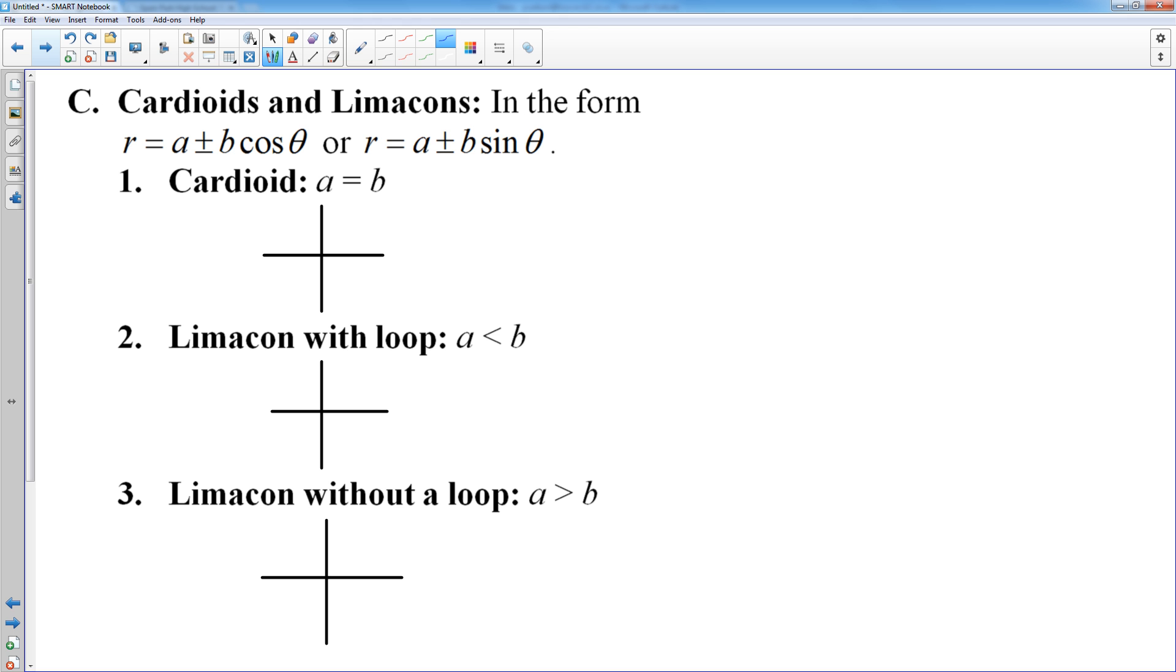The last ones, cardioids and limaçons. They're in the form A plus or minus B cosine theta or sine theta. If A and B are the same, you have a cardioid. And the general shape of a cardioid is it hits the origin and does this general shape. It can be oriented in any way. That's the general shape. It kind of comes to a cusp on the origin. And then it loops down and looks kind of like a heart, hence the name cardioid.